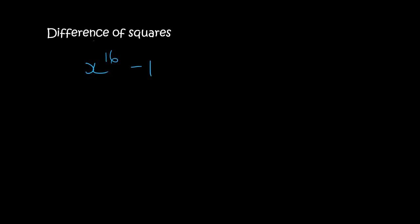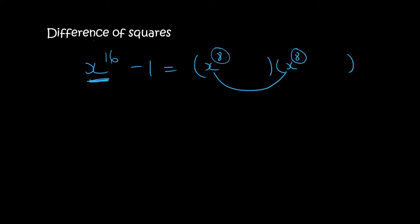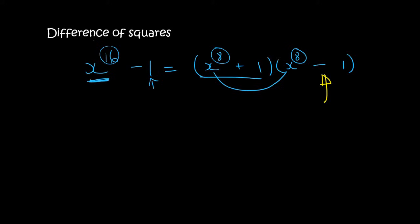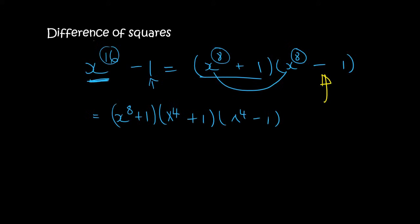Here's another long one — maybe pause the video and see how far you can get. We know x¹⁶ - 1 splits as (x⁸ + 1)(x⁸ - 1). Remember, 8 plus 8 is 16 — we're adding the exponents, not multiplying. And 1 times 1 gives 1. The minus bracket can go further, so we leave (x⁸ + 1) as is. That gives us (x⁸ + 1)(x⁴ + 1)(x⁴ - 1) as our next step — one gets a plus and one gets a minus.